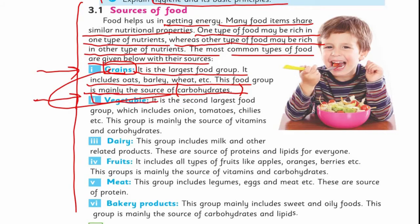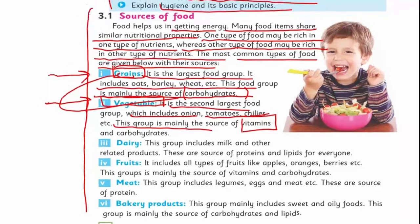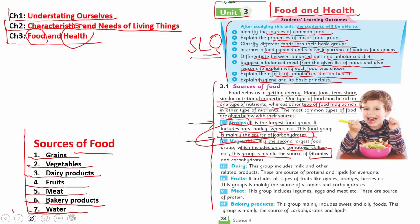Vegetables is the second largest food group. Don't forget it! It includes onion, tomato, chilis, etc. This group is mainly the source of vitamins. So, grains give carbohydrates, and in front of vegetables we write vitamins.